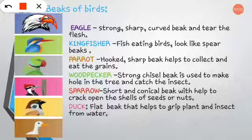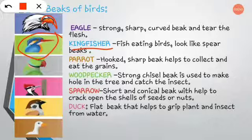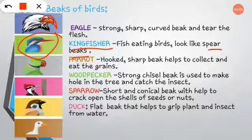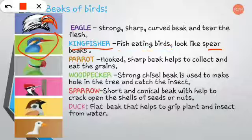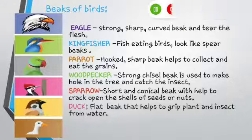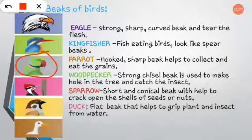The second bird is kingfisher. The kingfisher bird has a piercing beak — it looks like a piercing beak — and it helps for fish eating. This bird is called a fish-eating bird. Next bird is parrot. The parrot has a hooked beak that helps to collect and eat grains.